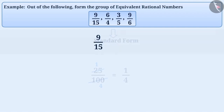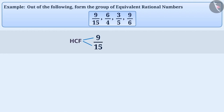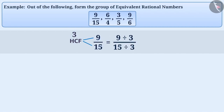Here, the HCF of the numerator and the denominator of 9 by 15 is 3. If we divide 9 and 15 by their HCF, which is 3, then we get the simplest form of the rational number 9 by 15, that is 3 by 5.